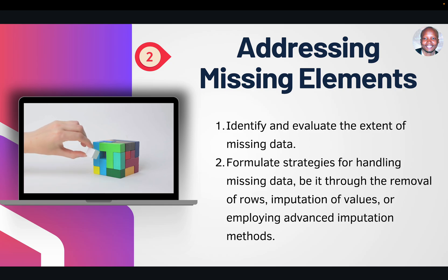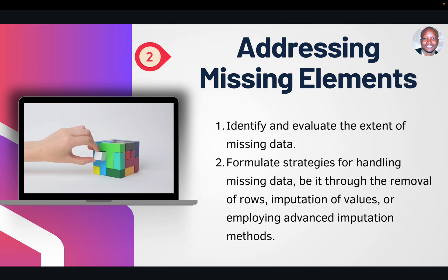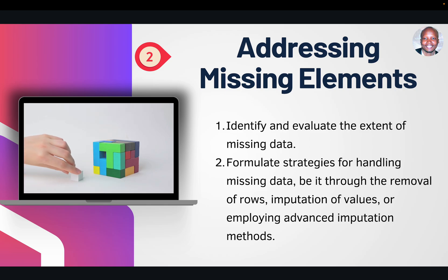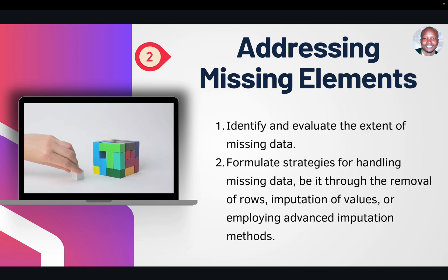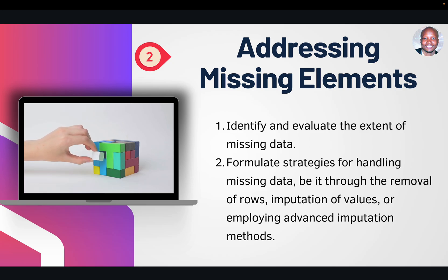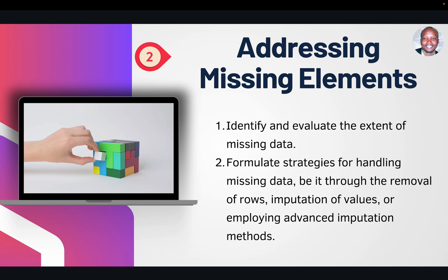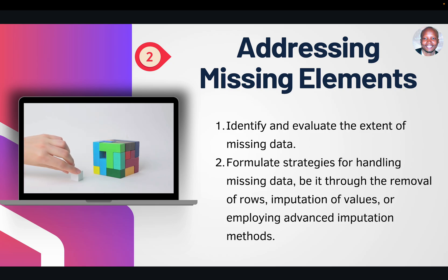Now we are addressing the missing elements. Identify and evaluate the extent of how much missing data you have. If a column has most of its data missing, it means that in the first instance you never needed that column — so you either remove the whole column or it is going to skew your analysis. You have to formulate strategies on how you're going to handle those missing data: either fill in defaults through imputation of values, or employ an advanced imputation method like a function that replaces blank or null values with zero. If the missing data means an entry was incomplete, you have to remove the whole column or the whole row, depending on the objective of the analysis.